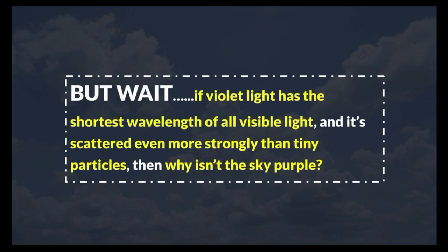But wait, if violet light has the shortest wavelength of all visible light, and it's scattered even more strongly than tiny particles, then why isn't the sky purple?